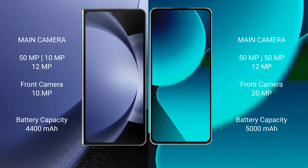Samsung Galaxy Z Fold 6 features a rear triple camera setup: 50MP plus 10MP plus 12MP, with a 10MP front camera. Xiaomi 13T features a rear triple camera setup: 50MP plus 15MP plus 12MP, with a 20MP front camera.